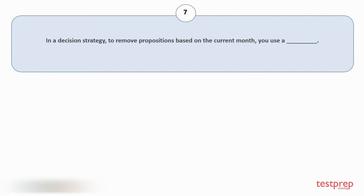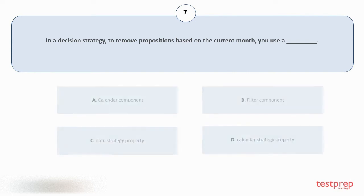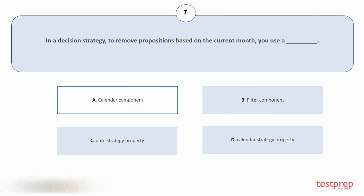Question number seven: In a decision strategy, to remove propositions based on the current month, you use a — your options are: A) Calendar component; B) Filter component; C) Date strategy property; D) Calendar strategy property. The correct answer is option A.